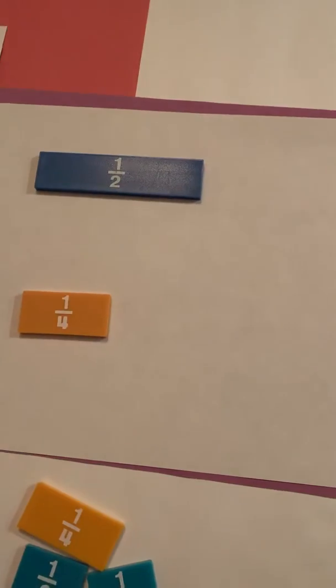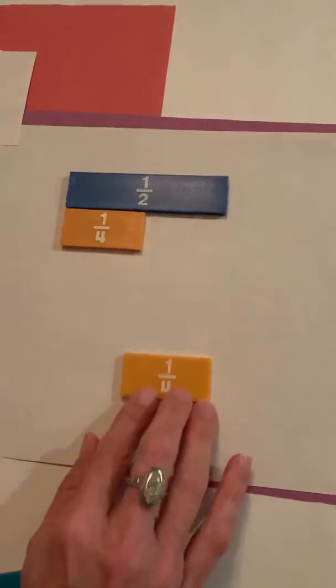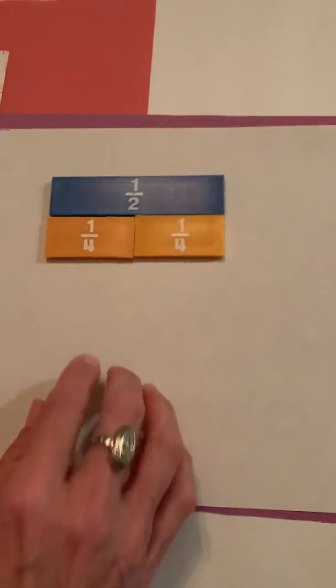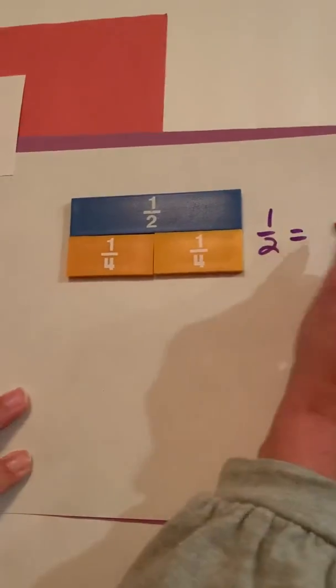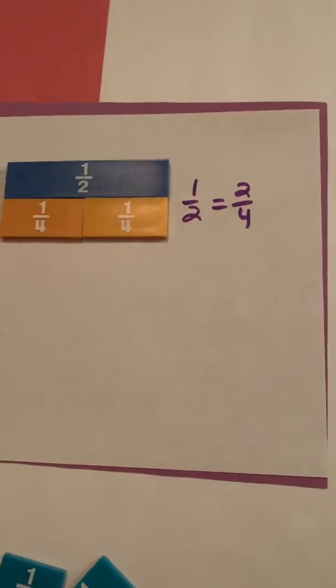Let's try our fourths. So I put my fourths up. I look here. And yes, I can see that one half is equal to one fourth, two fourths, two fourths.